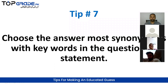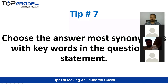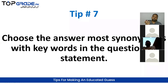Tip number 7: choose the answer most synonymous with the keywords in the question statement. When you read the question, identify the keywords — the main words. Then choose the option that is closest to those keywords.